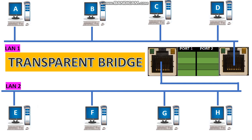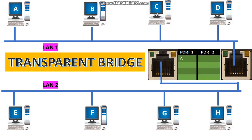Let us assume that two LANs are connected with a transparent bridge. At first, its table is empty. If station A wants to send a frame to station G, the packet is received by the bridge. The bridge takes the source address and destination address — here source is A and destination is G. The bridge observes that the packet is coming from the upper segment, concluding that station A is located in the upper segment. So it adds station A's address to the port 1 table. Now whenever the bridge receives a frame addressed to A, it passes that frame only to the upper segment.